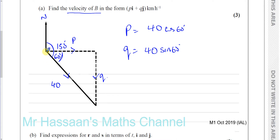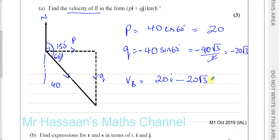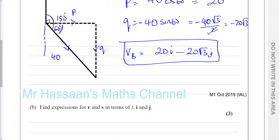Alternatively, resolving away from the angle: p = 40 sin 60. Cos 60 = 1/2, so p = 40 × 1/2 = 20. For q, it's going downward so it's negative: q = −40 sin 60. Sin 60 = √3/2, so 40 × √3/2 = 20√3, giving q = −20√3. Therefore the velocity of B is 20i − 20√3 j kilometers per hour. That's the answer to Part A.